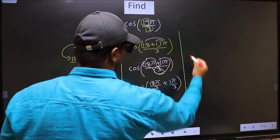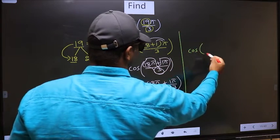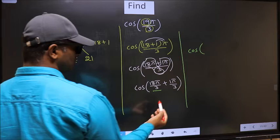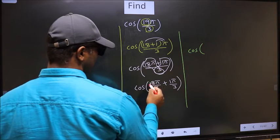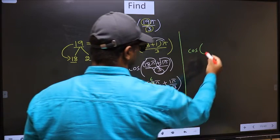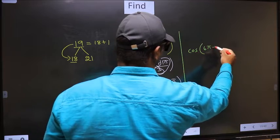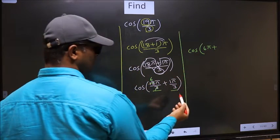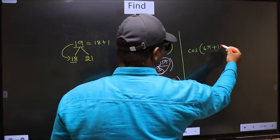Next, cos. Now here you should cancel. 3 1s, 3 6s. So we get 6π plus this no change, 1π by 3.